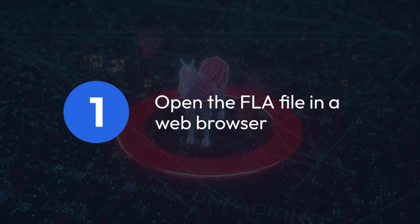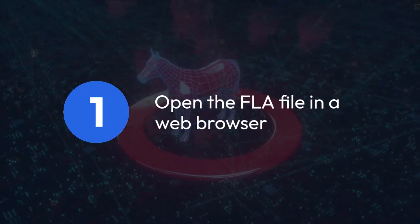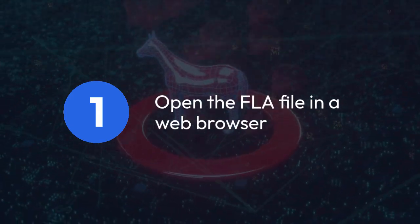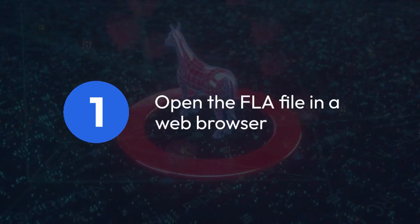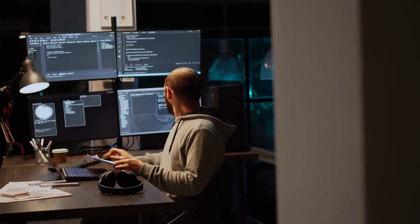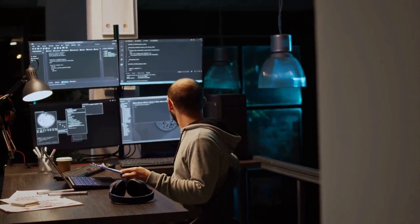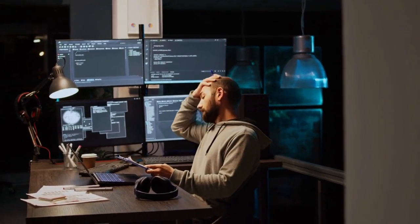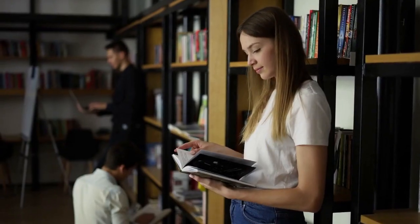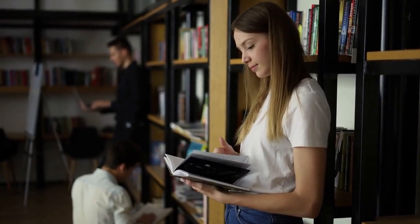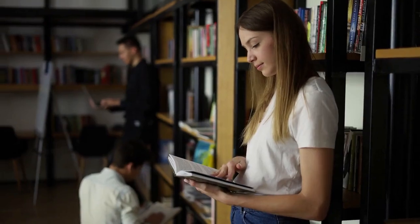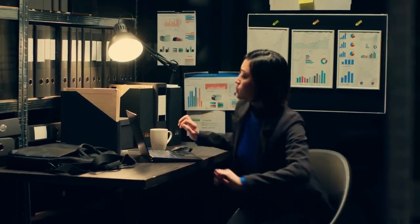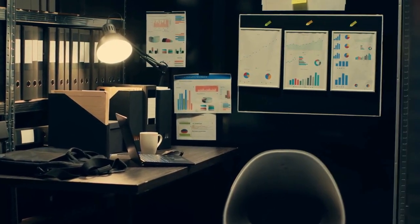Method 1: The simplest method, if you only need a preview, is to try opening the FLA file in a web browser. Many modern browsers can handle the basic animation and graphics within an FLA file without needing Animate installed. Just find your FLA file and drag and drop it into your browser window. It might work, it might not — it depends on the complexity of the FLA file.